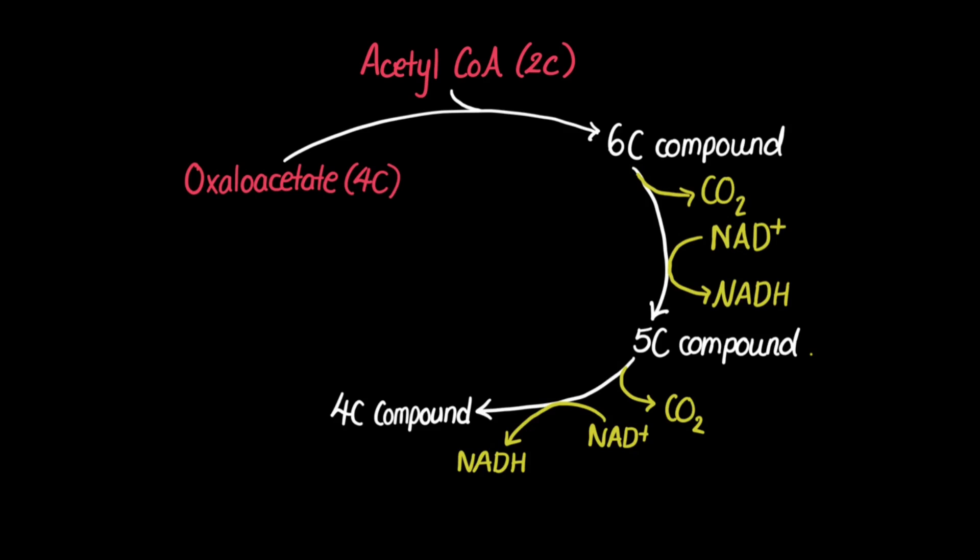In order to complete the cycle, this 4-carbon compound is then converted back to the original 4-carbon compound oxaloacetate. In this process, 1 ATP is produced from phosphorylating 1 ADP. We see reduction taking place twice in this part. FAD is reduced to FADH2. FAD is the other electron carrier. And then NAD again is reduced into NADH.